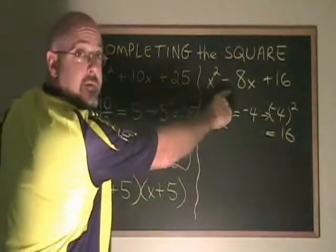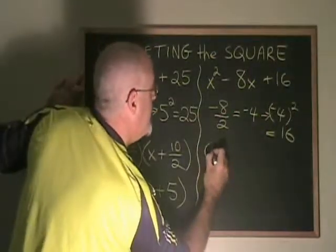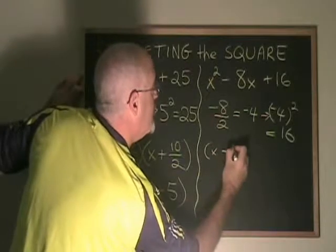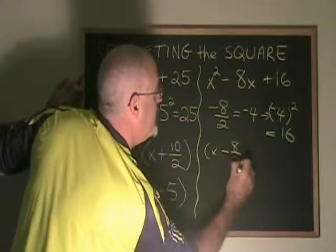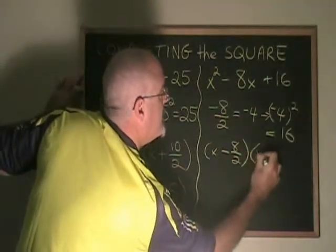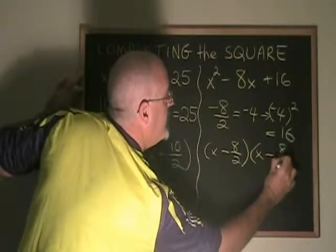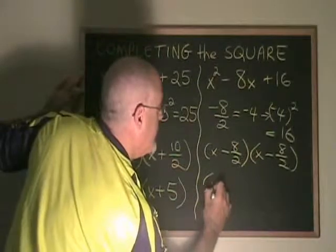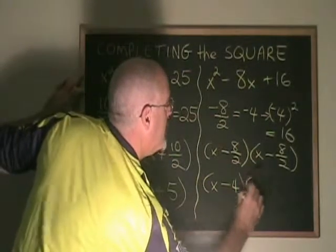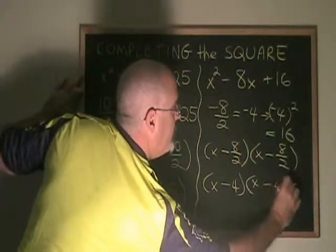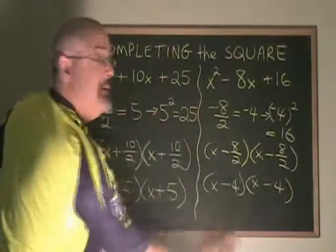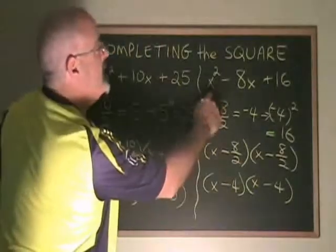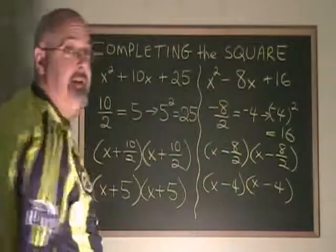This means the factors of this trinomial should be x minus 8 over 2, x minus 8 over 2, which simplifies to x minus 4, x minus 4. If I multiply these two binomials together, I will indeed get x squared minus 8x plus 16.